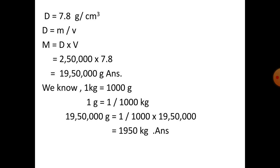Density equals m divided by v, so m equals d into v. D is 7.8 and v is 2,50,000, so mass equals 7.8 into 2,50,000, which equals 19,50,000 grams. Converting into kg, the answer is 1950 kg. So students, we have finished up to question number 11.